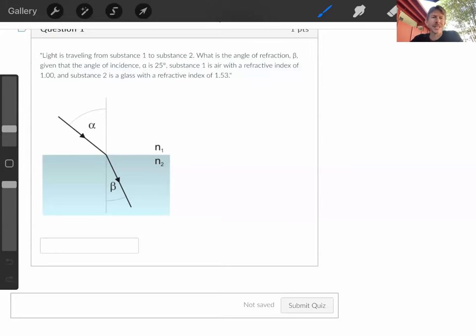This question says light is traveling from substance one to substance two. That's because the arrows are going this way. What is the angle of refraction beta? Given that the angle of incidence alpha is 25 degrees, substance one is air with a refractive index of 1.00, and substance two is glass with a refractive index of 1.53.